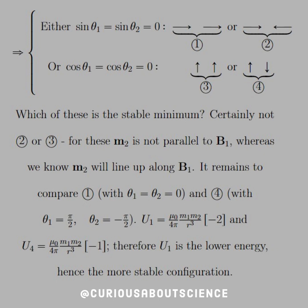So if case 1 has theta 1 equals theta 2 equals 0, and case 4 has theta 1 equals pi over 2 and theta 2 equals negative pi over 2, then we just plug them in and evaluate. If that's so, case 1 yields negative 2 in a bracket, whereas case 4 yields negative 1 in a bracket.